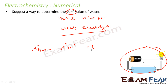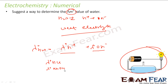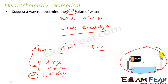We use Kohlrausch's law: λm⁰(H₂O) = λm⁰(H⁺) + λm⁰(OH⁻). Alternatively, you can use known values — λm⁰(HCl) + λm⁰(NaOH) − λm⁰(NaCl) — because adding HCl and NaOH equations and subtracting NaCl gives HOH, so λm⁰(water) = λm⁰(HCl) + λm⁰(NaOH) − λm⁰(NaCl).